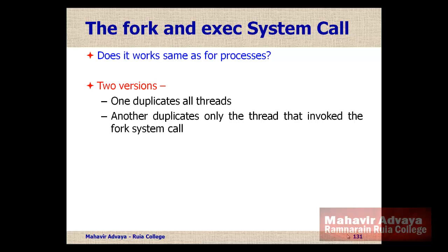The fork system call creates a child process. In Unix, whenever a fork system call is made, one version will duplicate all threads in the newly created process, while the other version duplicates only the thread that invoked the fork system call. Usage of these two versions depends on the application.